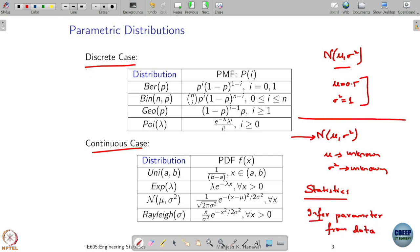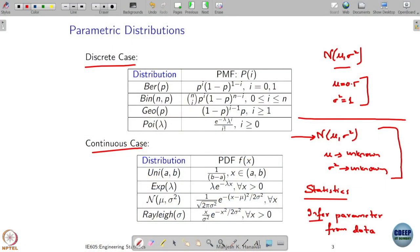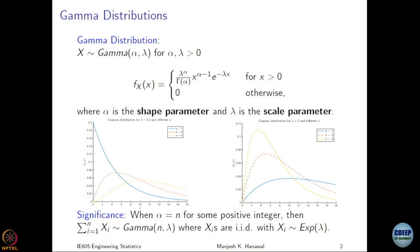Sometimes we call this inferring, sometimes estimating — we will make that more formal. To infer these parameters we need data. That is why, even though we start with some underlying probability model, when we talk about statistics we always start with data and from that data we have to find out the parameters of the distributions. Now, we want to expand our family of distributions and see what parameters they are associated with.